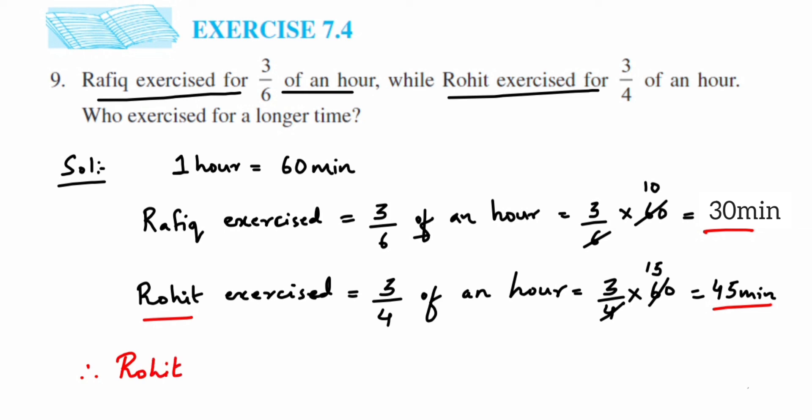In the question they're asking who exercised for longer time. So you can say Rohit exercised for more or for the longer time. So Rohit exercised for longer time.